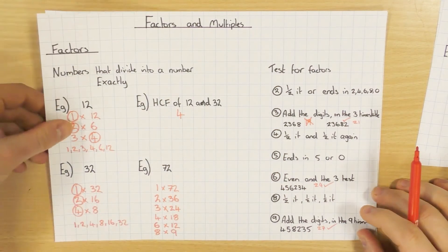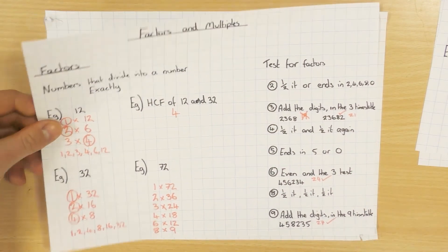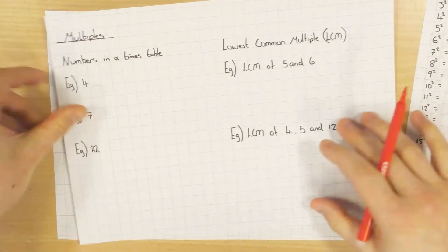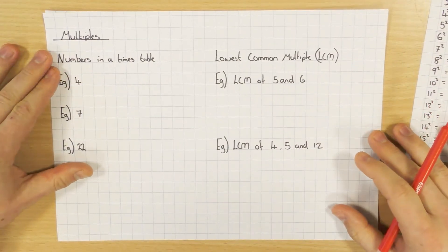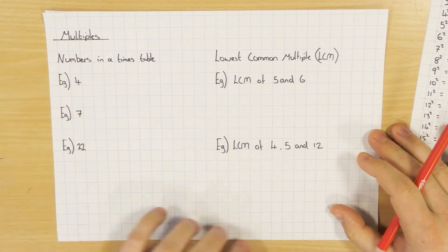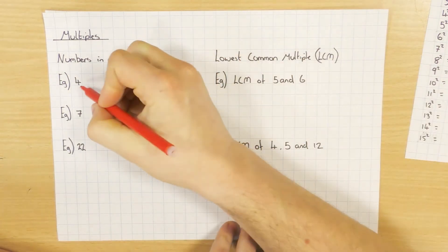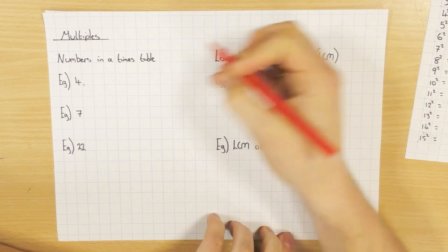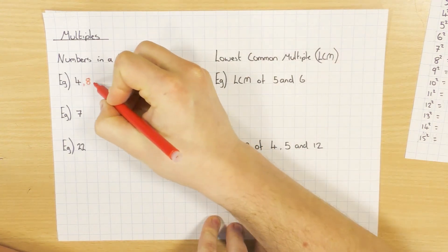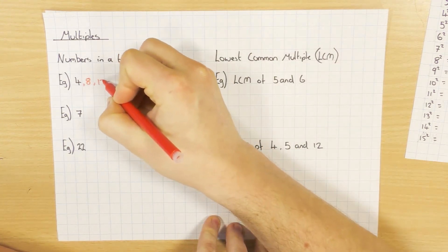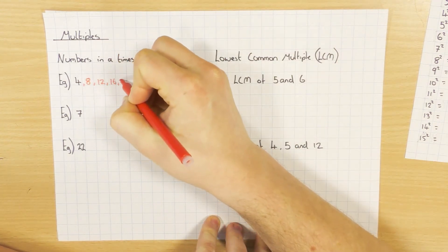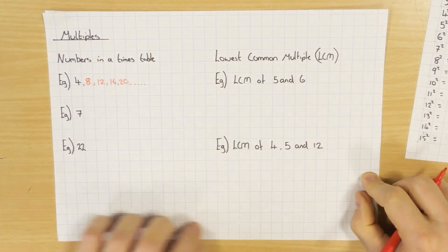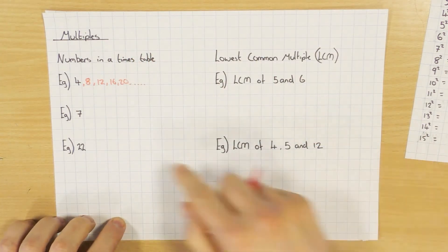Next thing to have a look at is multiples. Now multiples are much easier — multiples are just numbers in the times table. So if I go for the first 5 multiples of 4: obviously 4 is the first multiple of 4, then it's just the times table: 8, 12, 16, 20 and so on.